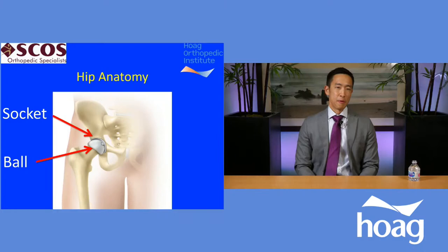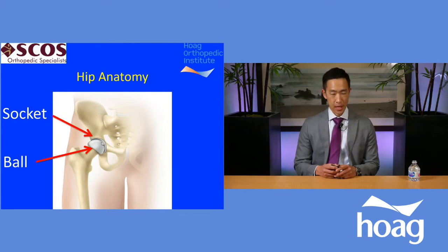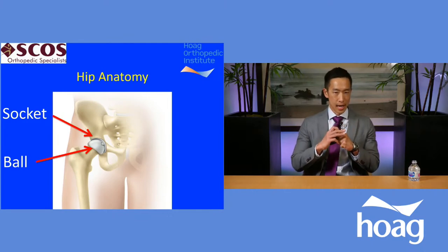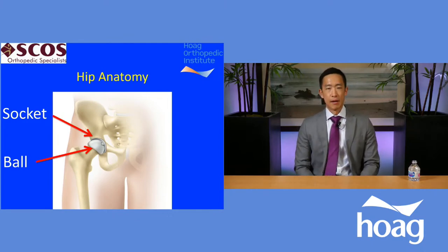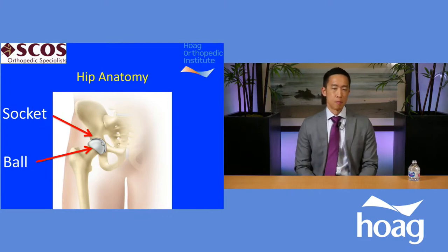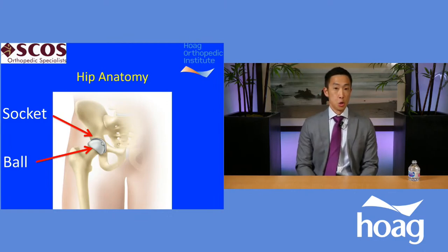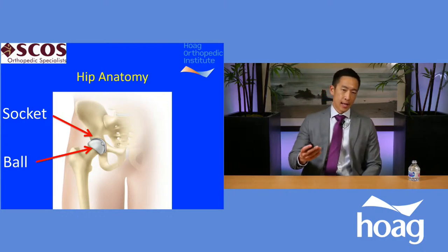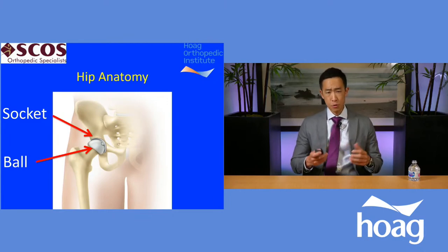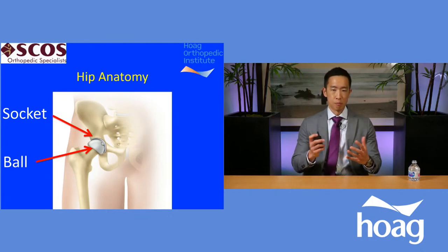Before we talk about what can make your hip hurt, it's important to discuss normal hip anatomy. The basic anatomy of the hip joint is comprised of a ball and socket — those two parts allow the hip to move smoothly. Between the ball and socket there is a layer of cartilage that allows the two parts to glide against each other, enabling you to enjoy everyday life. With a normal hip, you often don't notice it's there until it starts bothering you.